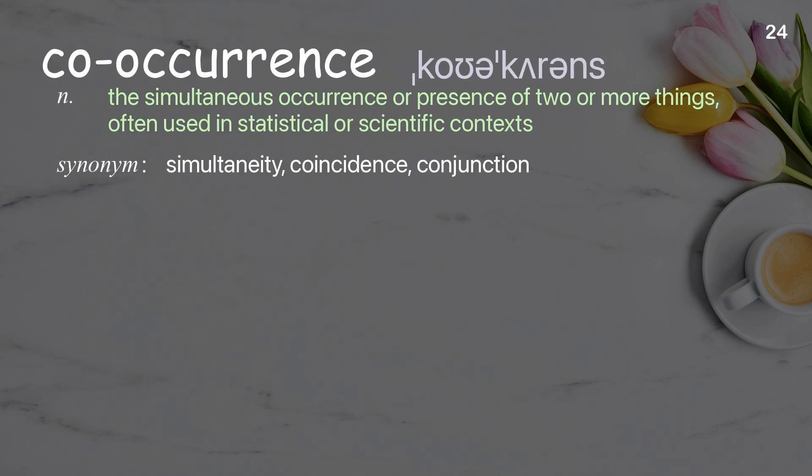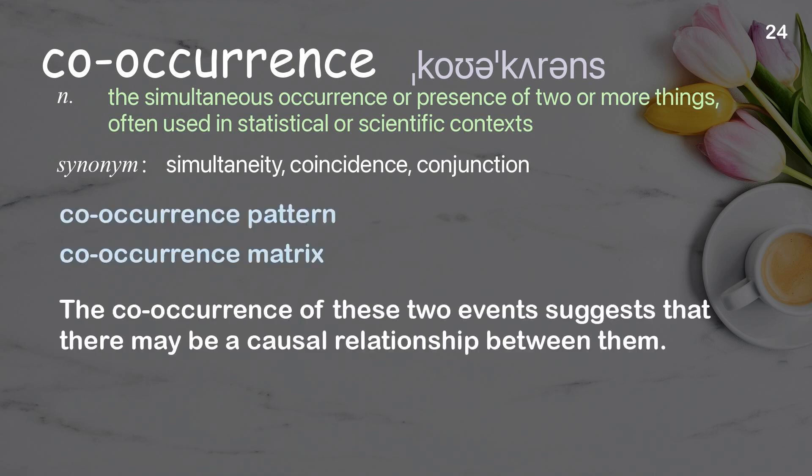Co-occurrence: the simultaneous occurrence or presence of two or more things, often used in statistical or scientific contexts. Examples: co-occurrence pattern; co-occurrence matrix. The co-occurrence of these two events suggests that there may be a causal relationship between them.